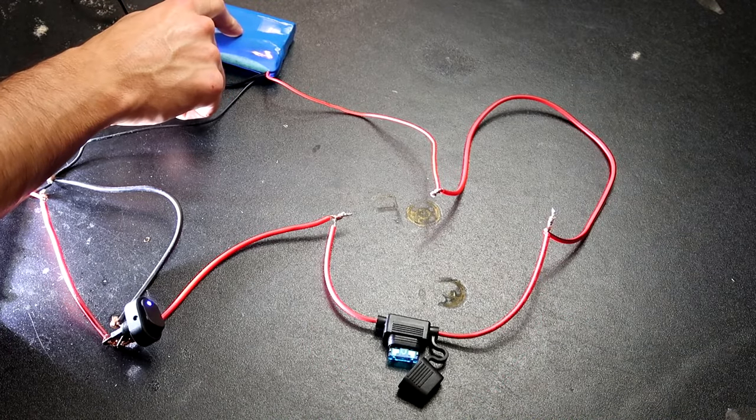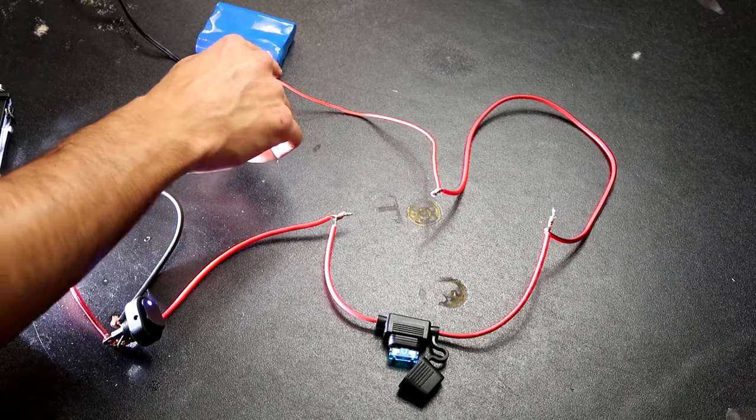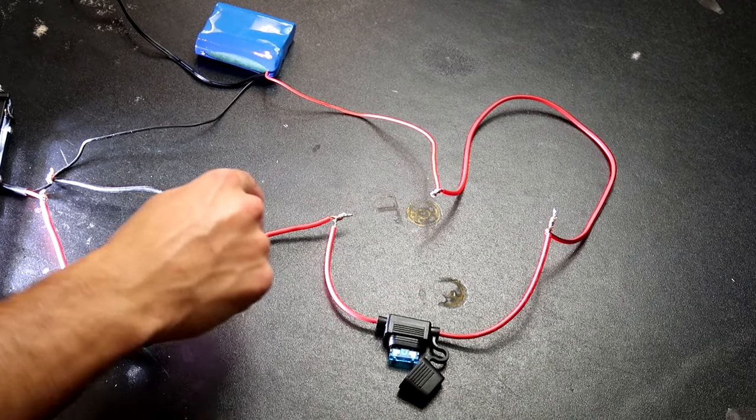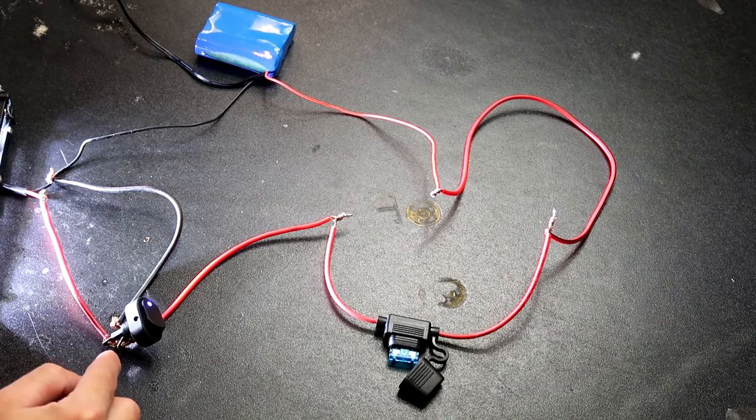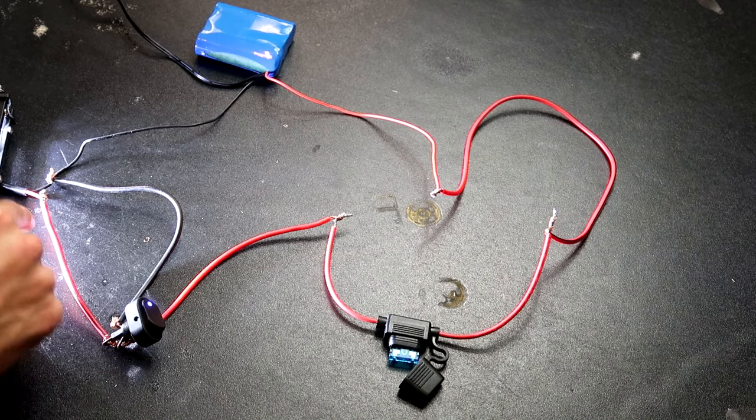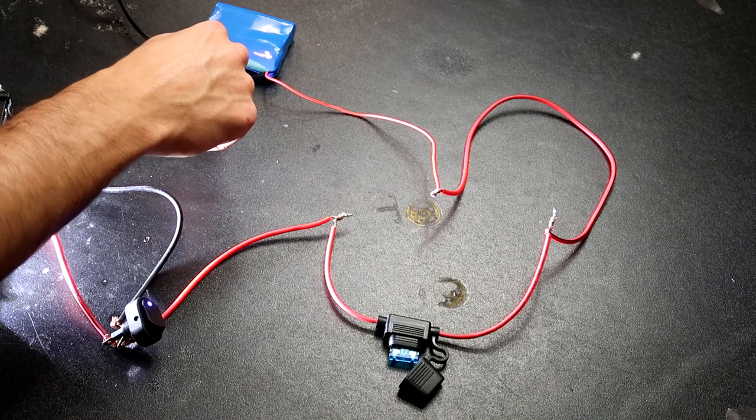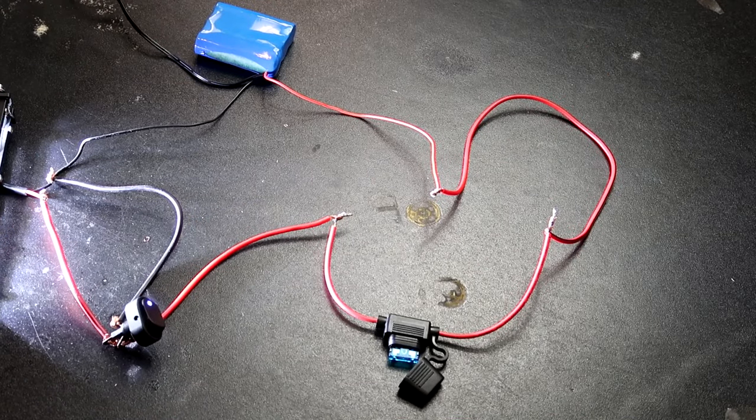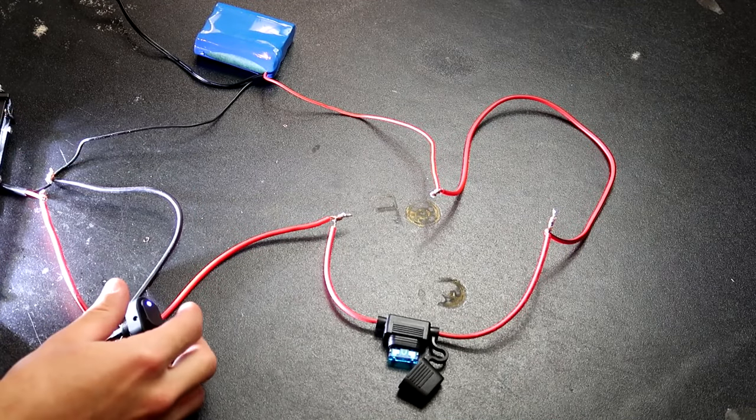So basically you got your 12 volt battery here. Red wire's power. Power's coming out, going up through the wire, through the fuse, goes up to your switch, through the switch, comes out the switch into your light, comes out the light and back into your battery. So basically the power is just doing a circle here. This and this wire is just for your LED.